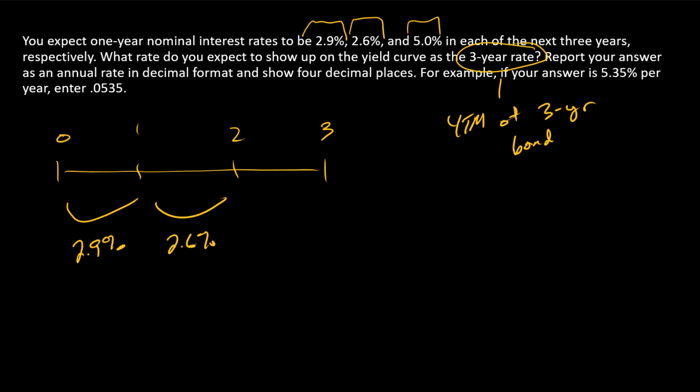Then 2.6% in year two and 5.0% in year three. This three-year rate answers the question: what three-year constant rate would get us to the same point when we move from time zero to time three?